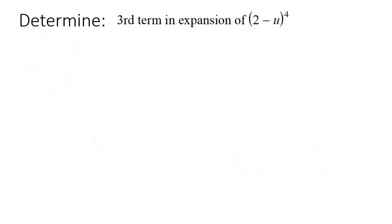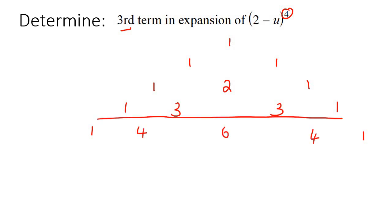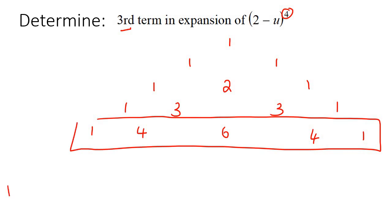Two more examples. Here they want the third term in the expansion with a power of 4. If they want a power of 4, then you have to go down to row 5 in Pascal's triangle — Pascal's triangle always goes one row extra than the power. So we fill that in: 1, 2, 3, 4 rows. Filling in: 1 plus 1 is 2; then 3, 3; then 4, 6, 4. So these are the numbers we are looking for: 1 plus 4 plus 6 plus 4 plus 1. We're going for the third term — term 1, term 2, term 3 — so we're only looking at the 6.